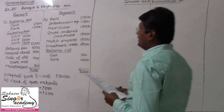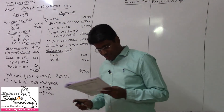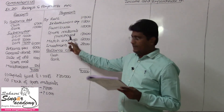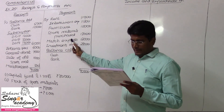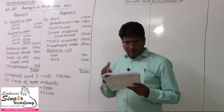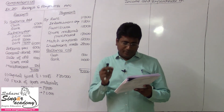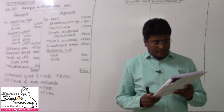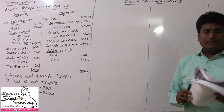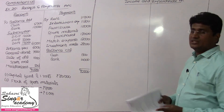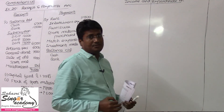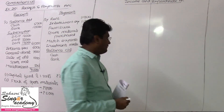Exercise number 20, a comprehensive illustration from the receipts and payment account and from the information given below. Ramana Thabram Sports Club — prepare income and expenditure account for the year ending 31st December 2018 and the balance sheet as on that date. We need to prepare the income and expenditure account, closing balance sheet. Opening balance sheet is not available.